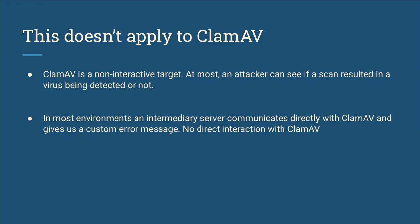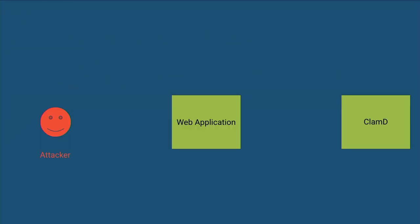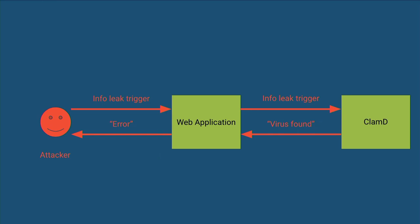This doesn't apply to ClamAV because it is a non-interactive target. You don't have a real protocol exchange with it. At most, an attacker can see if the scan resulted in a virus detection. And realistically, in most environments, you're not talking directly to ClamAV — there's an intermediate server like a web application that scans on your behalf and displays a custom error message. So there's no real way to get ClamAV to send you a pointer.